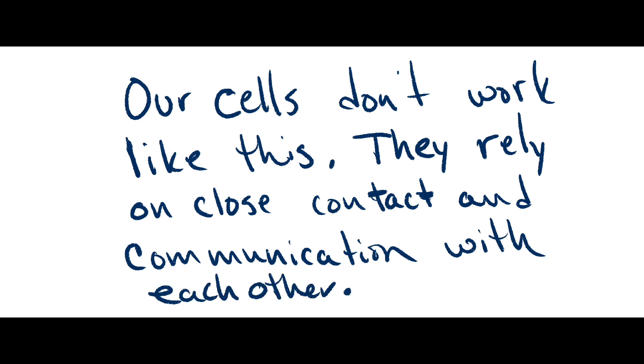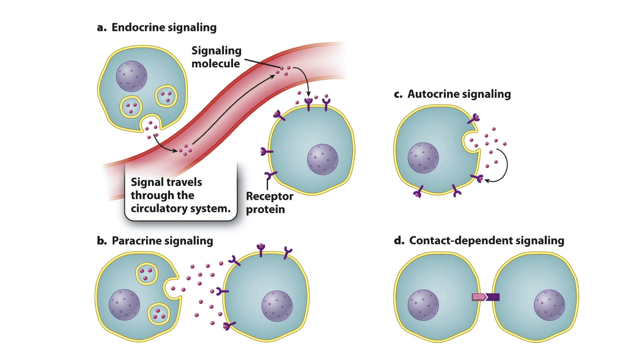There are four types of cell signaling we'll talk about: endocrine signaling, paracrine signaling, autocrine signaling, and contact dependent signaling.